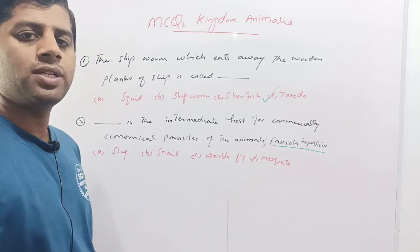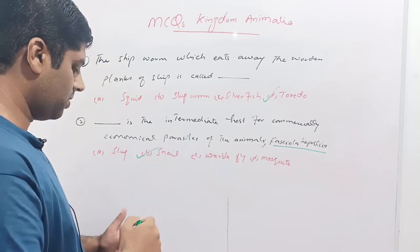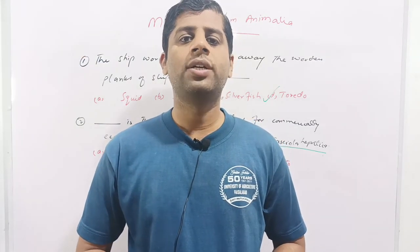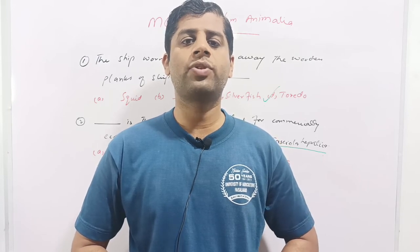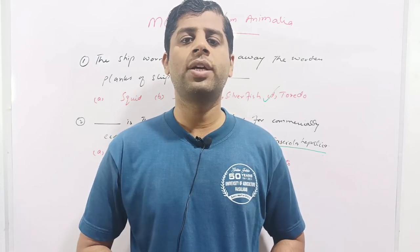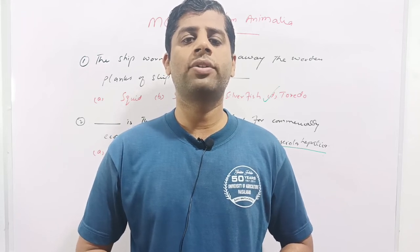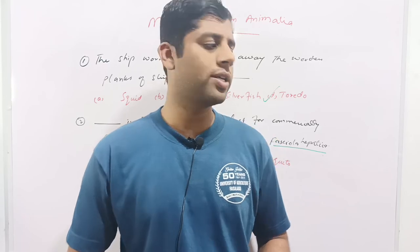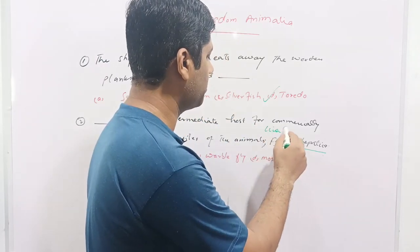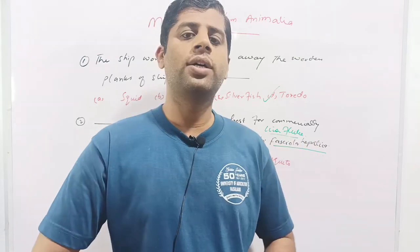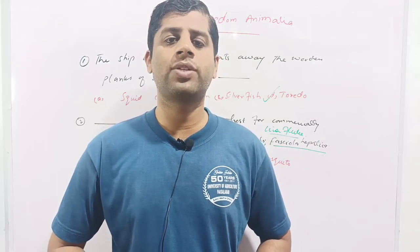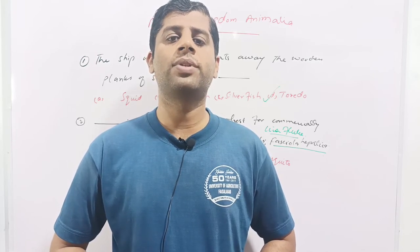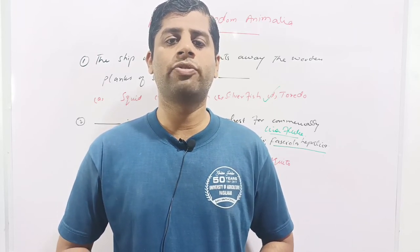Fasciola hepatica is transmitted by the snail, so option B is correct. Snail belongs to the phylum Mollusca and serves as the carrier for Fasciola hepatica. The life cycle of Fasciola hepatica is completed in the snail. When animals eating grass ingest snails containing Fasciola hepatica, they become infected. This is also called liver fluke, and it is a highly economical parasite because it damages the liver and health of animals, causing production decline and sometimes death.